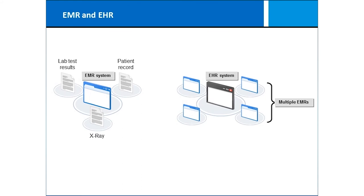Electronic medical records and electronic health records are distinct. An electronic medical record is an individual's records — lab test results, patient records, x-rays, and so on. The electronic health record, EHR, is a broader collection of multiple data points from various EMRs. Make sure you understand the distinction: an EMR is a patient-level record, while an EHR is an aggregate picture, probably not individually identifiable.